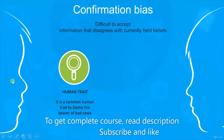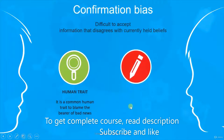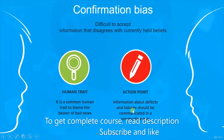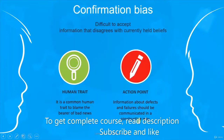To handle this situation between tester and developer, the action point is that information about defects and failures should be communicated in a constructive way. Whenever the tester finds a defect and communicates it to the developer, he should not criticize the developer but instead clearly explain what the real problem is.